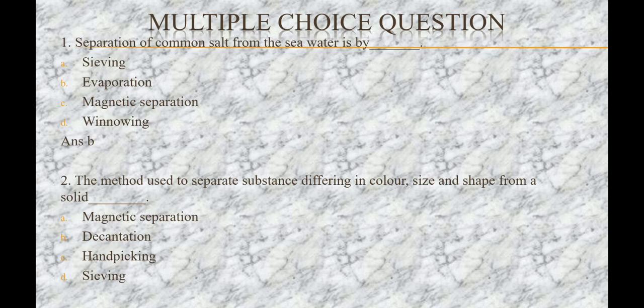Next question is: the method used to separate the substance differing in color, size and shape from a solid — options are: A) magnetic separation, B) decantation, C) hand picking, D) sieving. The answer is C, that is hand picking.